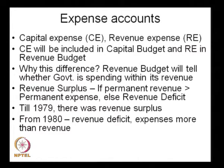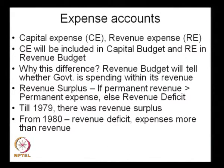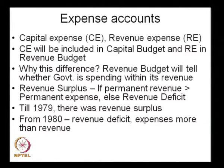A revenue deficit or revenue surplus is a result of revenue expenditure being more or less than the receipts the government receives. If permanent revenue is greater than permanent expense, there is a revenue surplus; otherwise there is a revenue deficit. Historically, till 1979 India had a revenue surplus, which means revenue expenses were less than the receipts received annually. It is only from 1980 that we have constantly seen a revenue deficit because revenue expenses were more than the receipts.